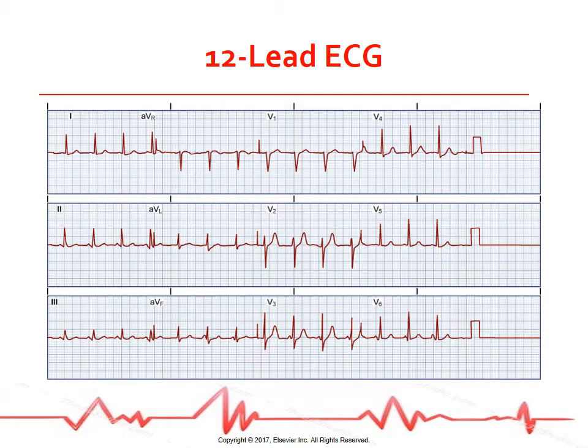Typically, an ECG consists of 12 leads — another name for a view of the heart's activity. A lead consists of a positive and negative electrode, with the positive electrode being the seeing eye. Activity coming toward the positive electrode produces an upward deflection on the EKG paper, and one going away from the seeing eye produces a downward deflection. This is the reason lead tracings look different.